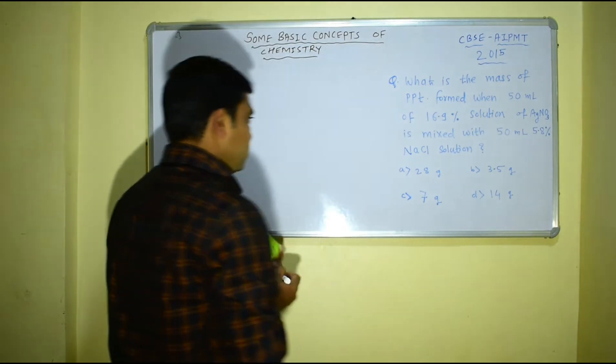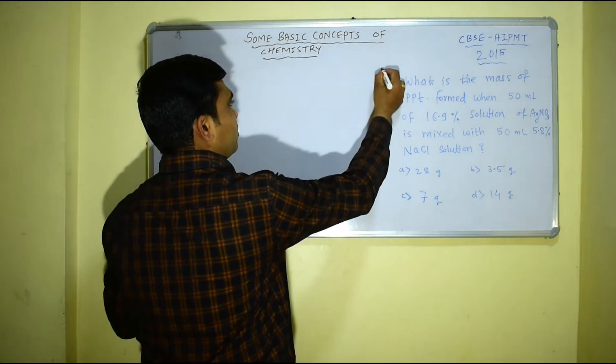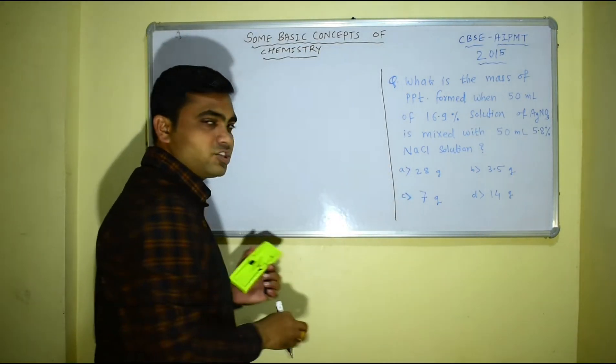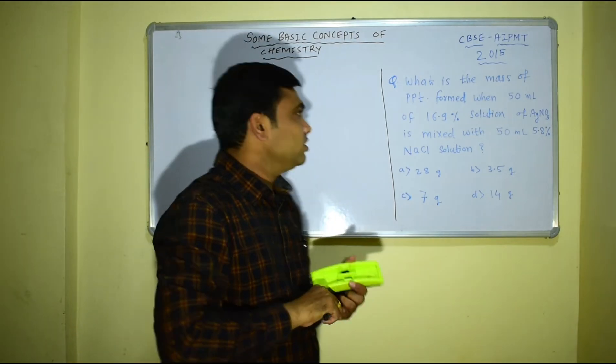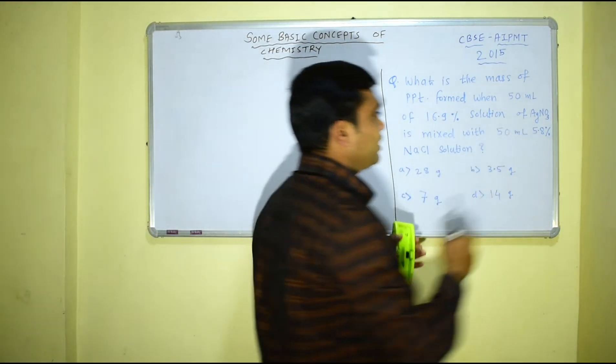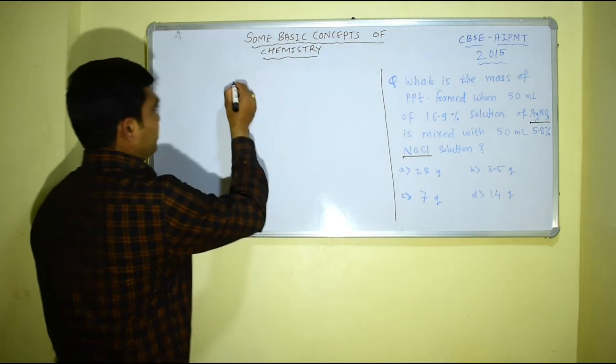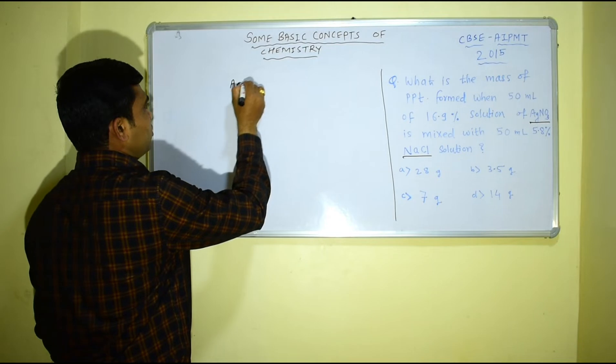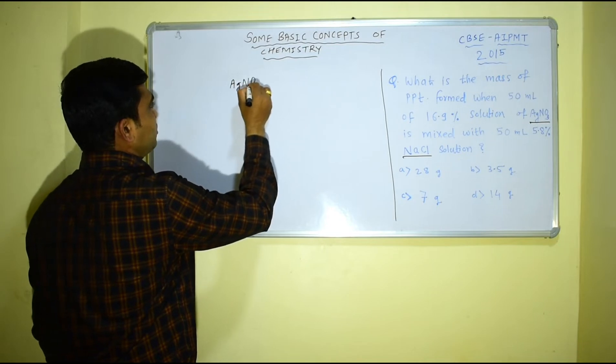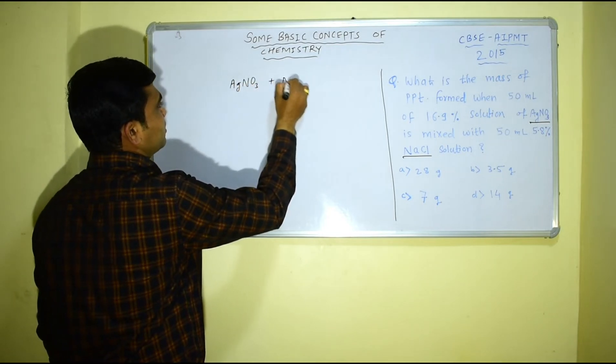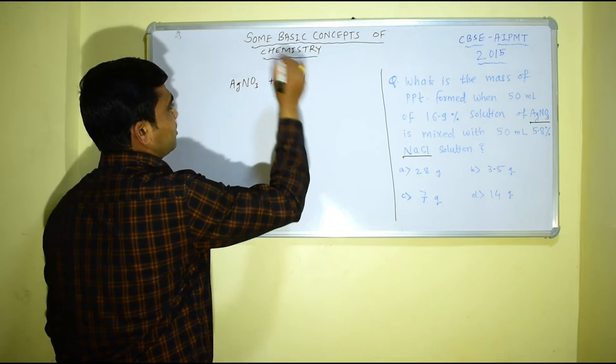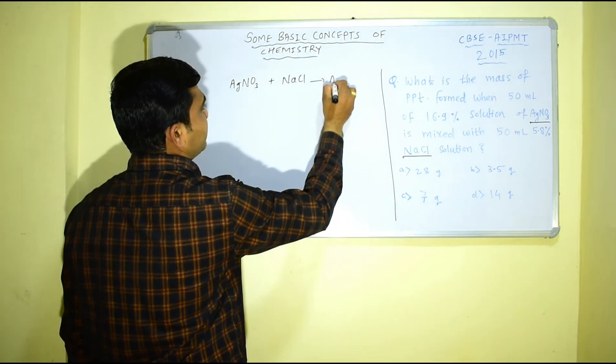Now to solve this, first of all let us write down the reaction which takes place between these two. That is silver nitrate when mixed with sodium chloride: AgNO3 plus NaCl, this will give you AgCl plus NaNO3 sodium nitrate. This is a balanced chemical reaction.